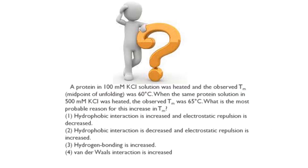Here is a question: a protein in 100 mM KCl solution was heated and the observed Tm (melting temperature) was 60°C. When the same protein in 500 mM KCl was heated, the observed Tm was 65°C. What is the most probable reason for this increase in Tm? The hint is that increasing KCl concentration increased the stability of the protein — and we already studied what happens when salt concentration increases. Apply that reasoning to answer the question and write your answer in the comment section.